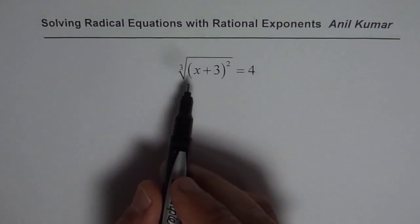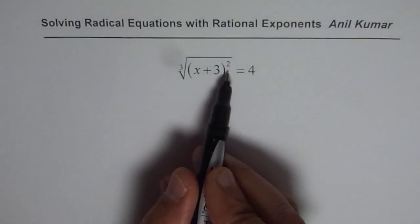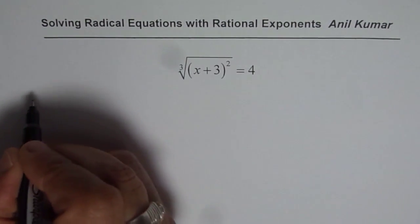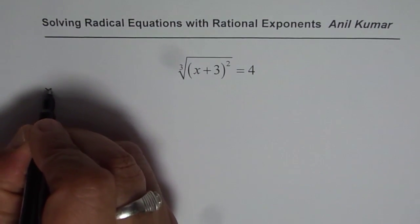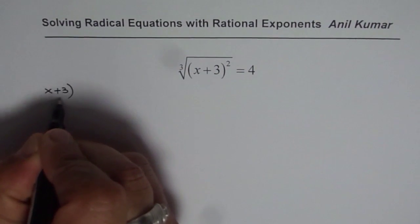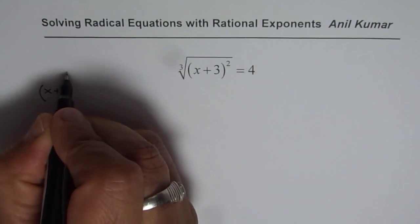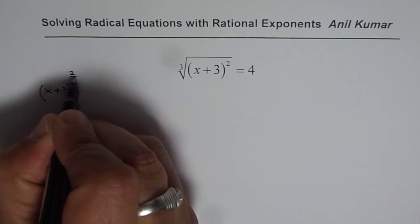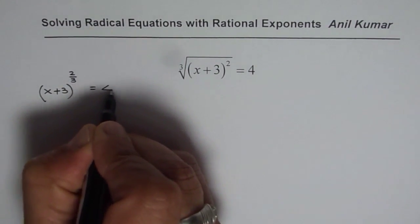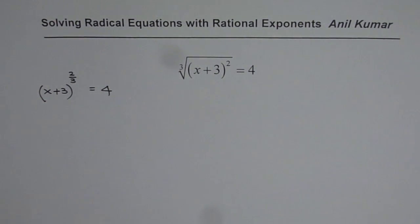Now to solve such an equation, let us think about the rational exponent. We could rewrite this as x plus 3 to the power of 2 over 3 equals to 4. That is the alternate way of writing the radical expression given to you.